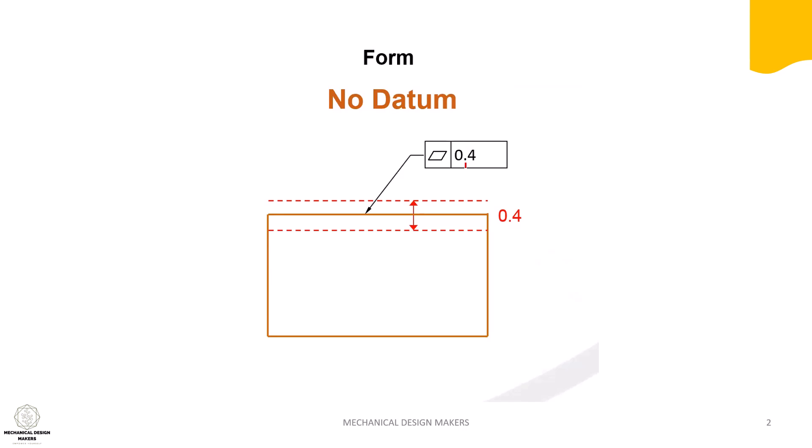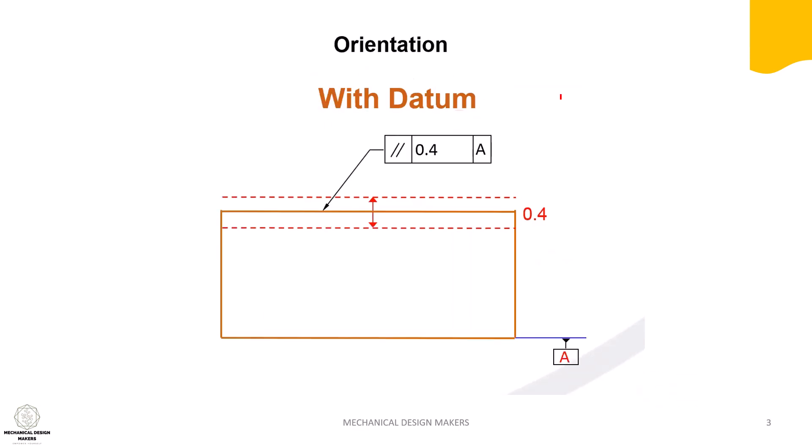So it is a flatness tolerance pointed to theoretical surface of a plane. So the form tolerance always used is without datum. Orientation means one feature to another feature. Guys, please remember: one feature to another feature.